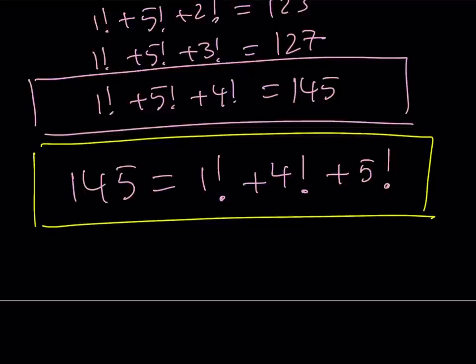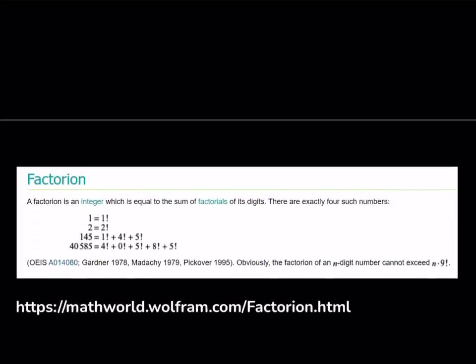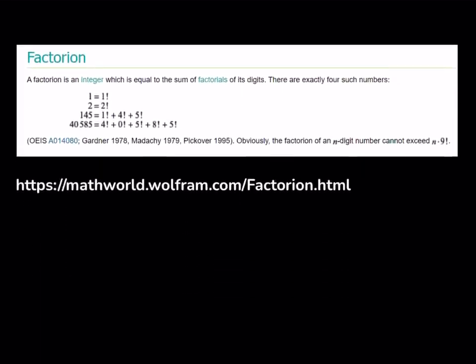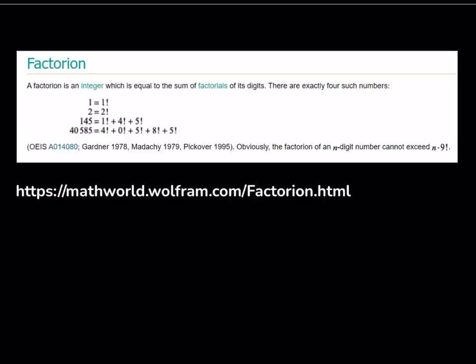Here we go. Here's some information. I'm going to share the link also down below so you can check it out. These numbers are called factorians. So by definition, a factorian is an integer which is equal to the sum of the factorials of its digits. There are exactly four such numbers.